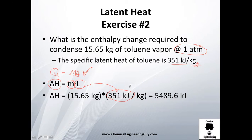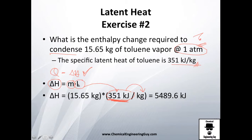What does that mean? Essentially, at this pressure and at the saturation temperature, 351 kilojoules are needed to condense one kilogram. This is important because we're talking about condensing — we're going to see that this change is going to be negative. But we're going to leave that for the next slide.